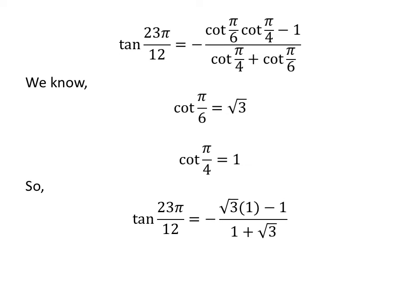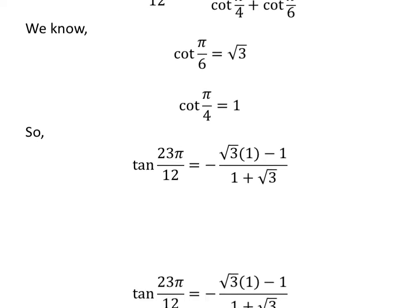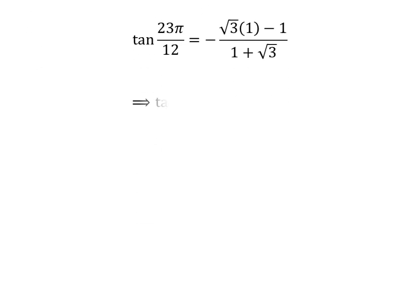We get tangent of 23 times pi upon 12 is equal to minus of square root of 3 times 1 minus 1, upon 1 plus square root of 3. Further simplification gives us tangent of 23 times pi upon 12 is equal to minus of square root of 3 minus 1, upon square root of 3 plus 1.